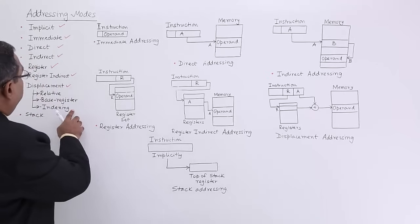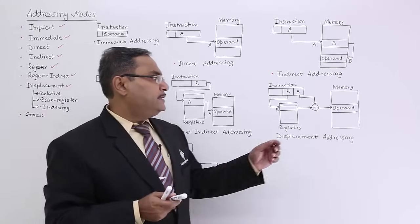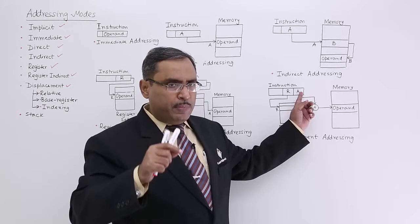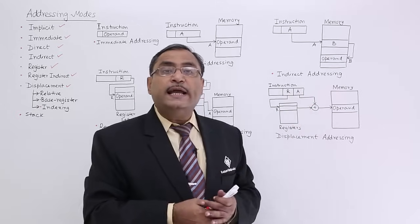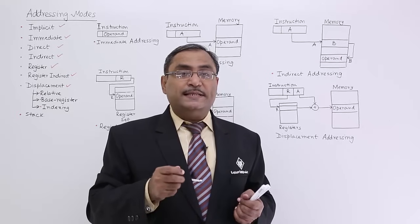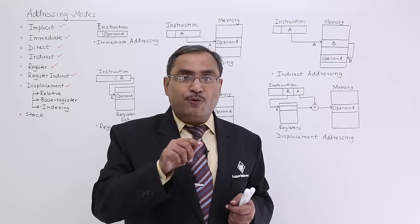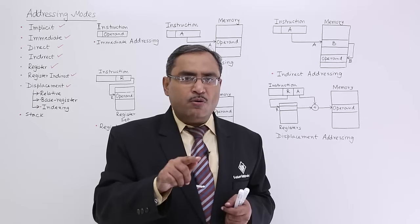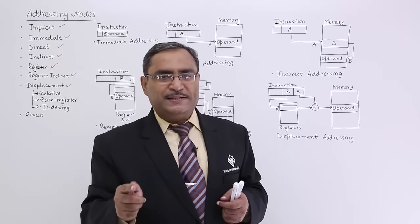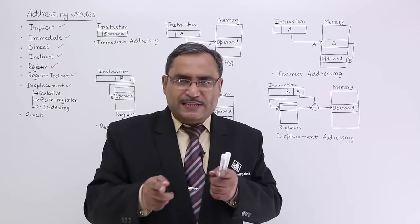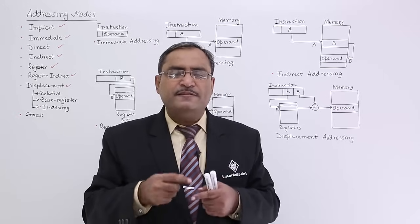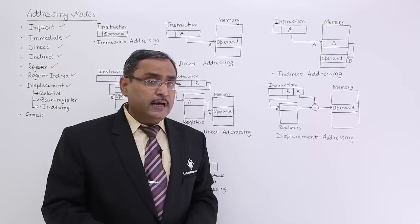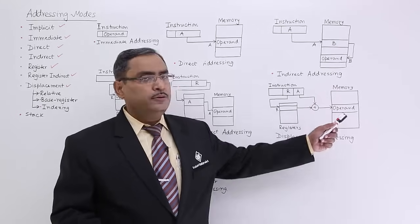The third subcategory is indexing. Here, a register contains the starting base address of a memory block and another register R contains the index — similar to accessing array elements like A[4], A[5], A[6], where A is the starting base address and 4 or 5 is the index. Adding the base address and the index gives the physical address to locate the data in memory.